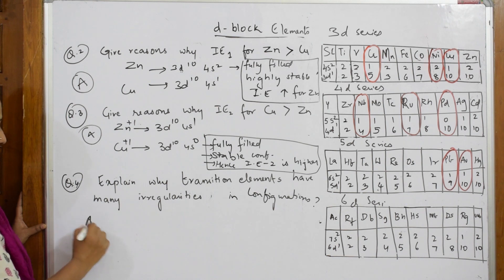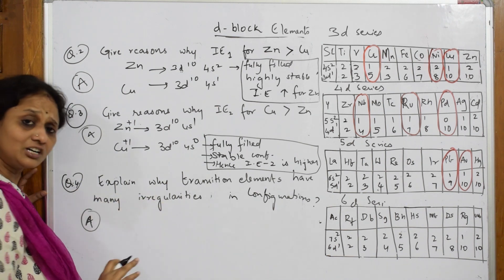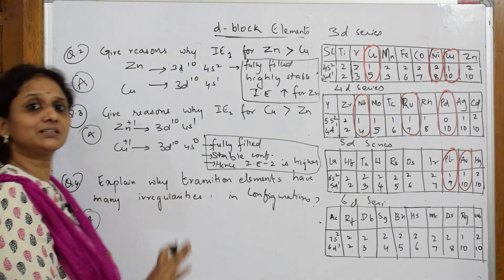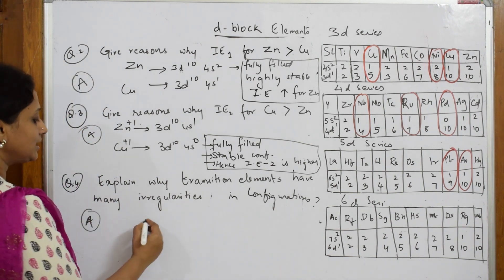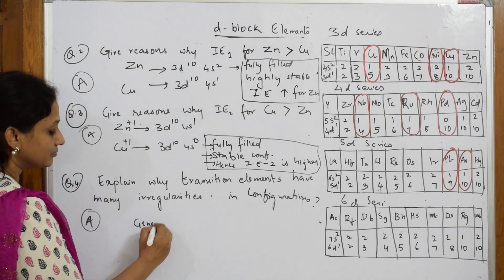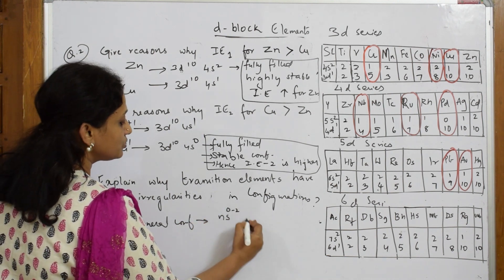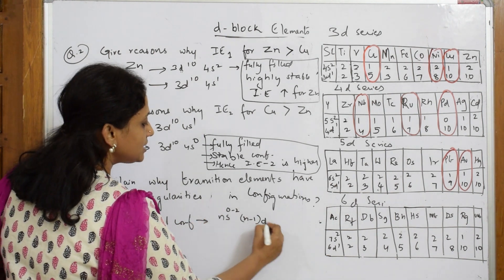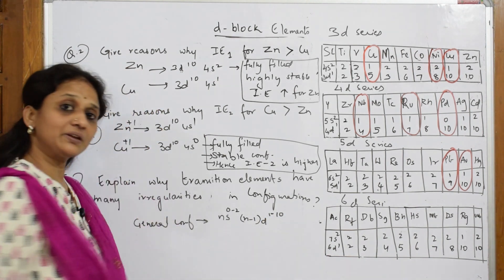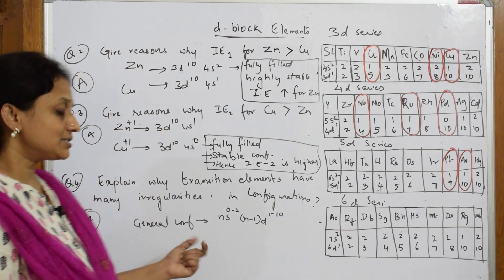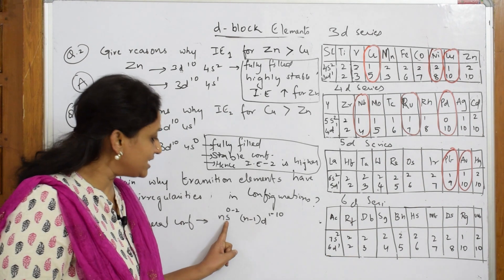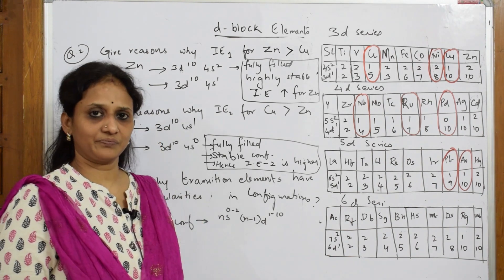Let us see the answer. When I have to write the answer for this, first try to write the general configuration because they have not asked specifically this particular series. Write generally the general configuration for this is ns 0 to 2, n minus 1 d 1 to 10.